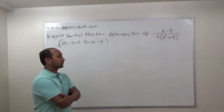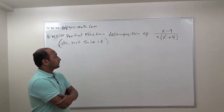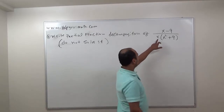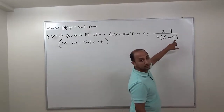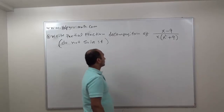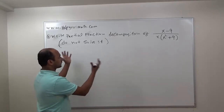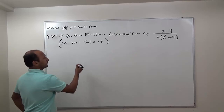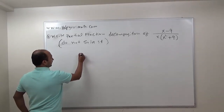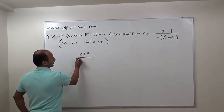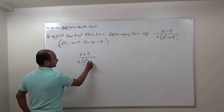Let's continue with a similar problem: (x minus 9) over x times (x squared plus 9). In this case, we will not solve it — just write it as a partial fraction decomposition of (x minus 9) over x times (x squared plus 9).